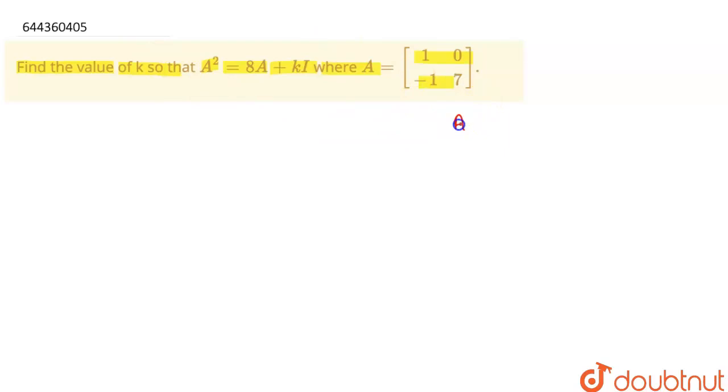So how can we find it? We know that A² can be written as A times A. So I can write the matrix A as [1, 0, -1, 7]. Similarly, the second matrix would be [1, 0, -1, 7].